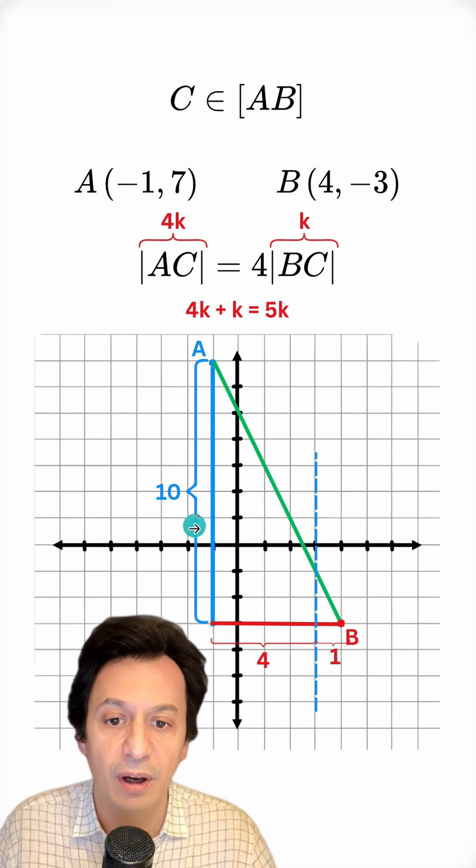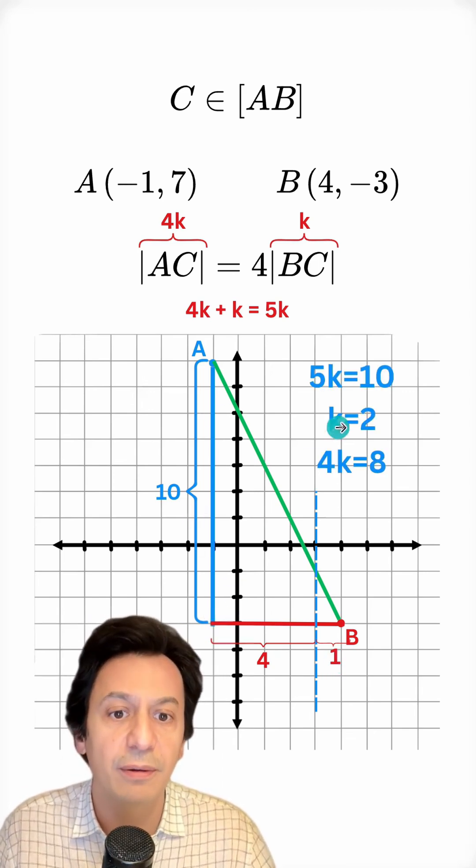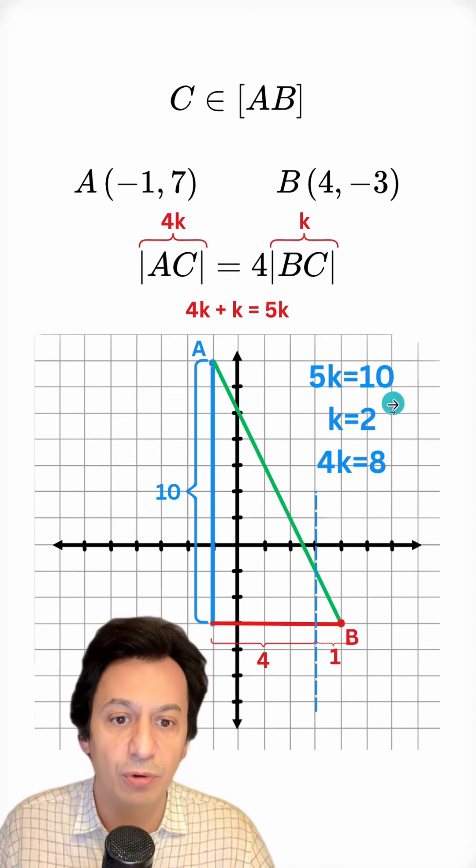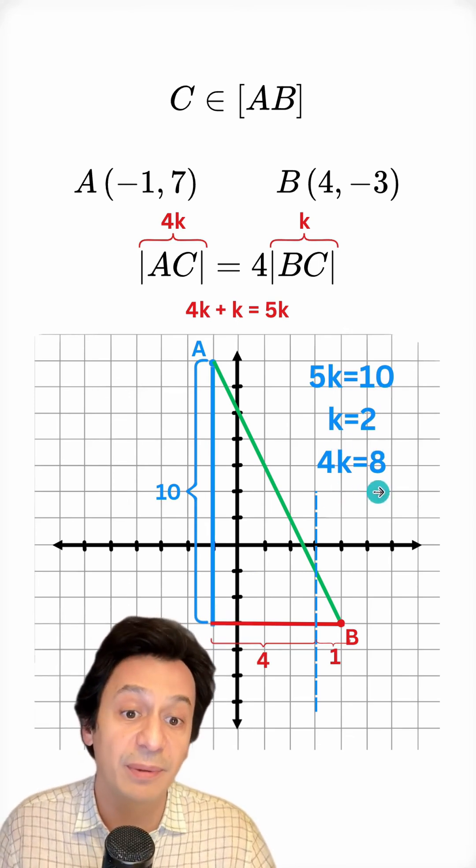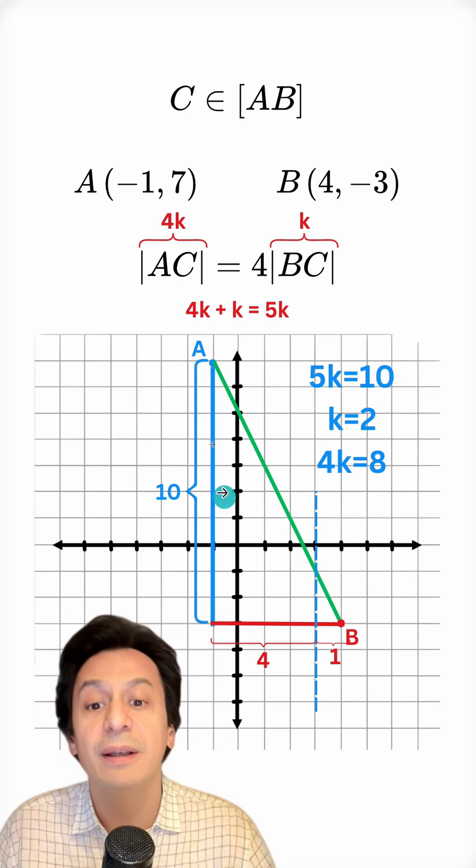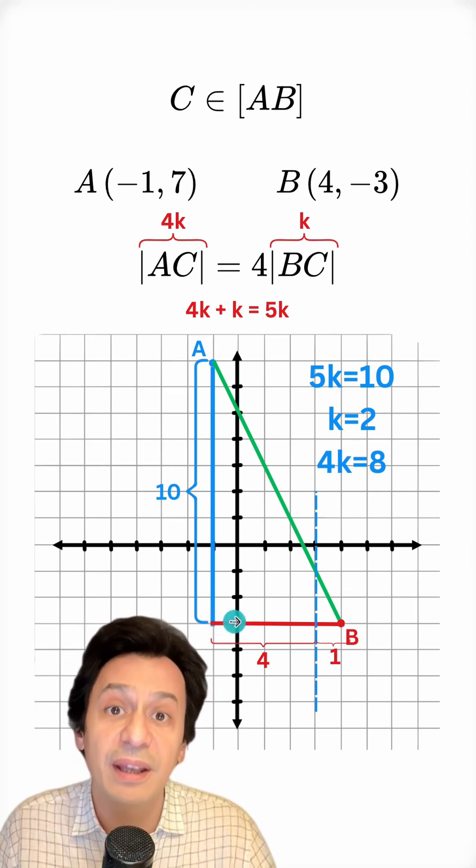Now let's also look at the vertical part. We had said this part is 10. Therefore, if we set 5K equal to 10, K becomes 2 and 4K becomes 8. So it will be at such a position that it divides this part into two pieces, 8 and 2.